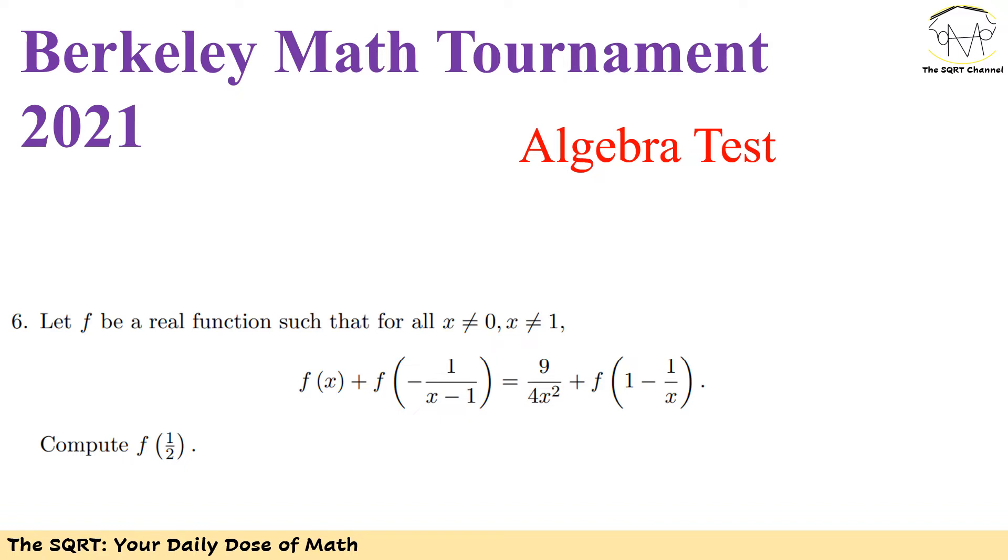The original problem is saying that f is a real function. We don't define f for 0 and 1. We have the expression that you saw and we are going to compute f of 1 over 2.